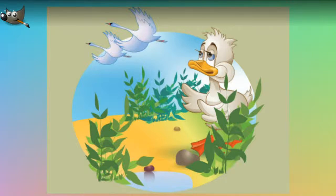And it flew out into the water and swam towards the beautiful swans. These looked at it and came sailing down upon it with outspread wings. "Kill me," said the poor creature, and bent its head upon the water expecting nothing but death. But what was this that it saw in the clear water? It beheld its own image, and lo, it was no longer a clumsy dark gray bird, ugly and hateful to look at, but a swan!